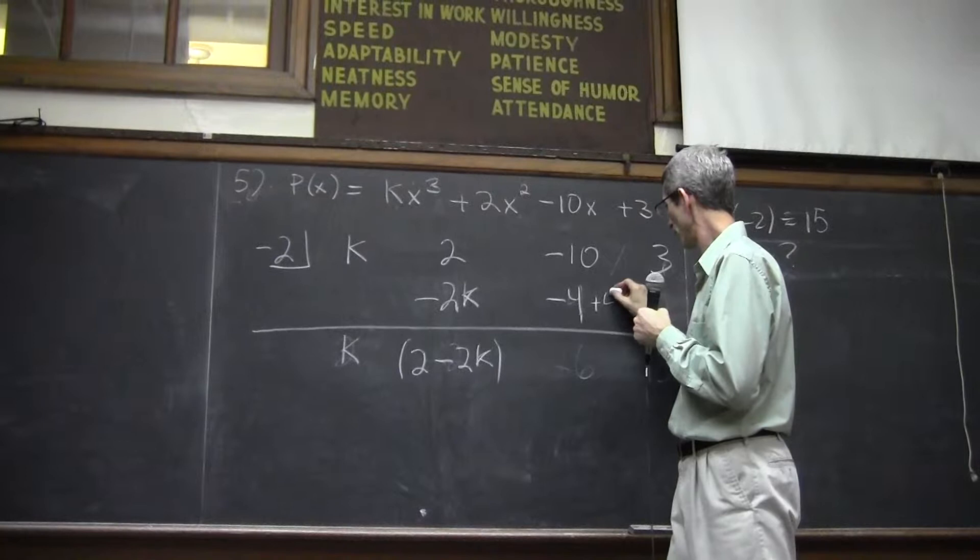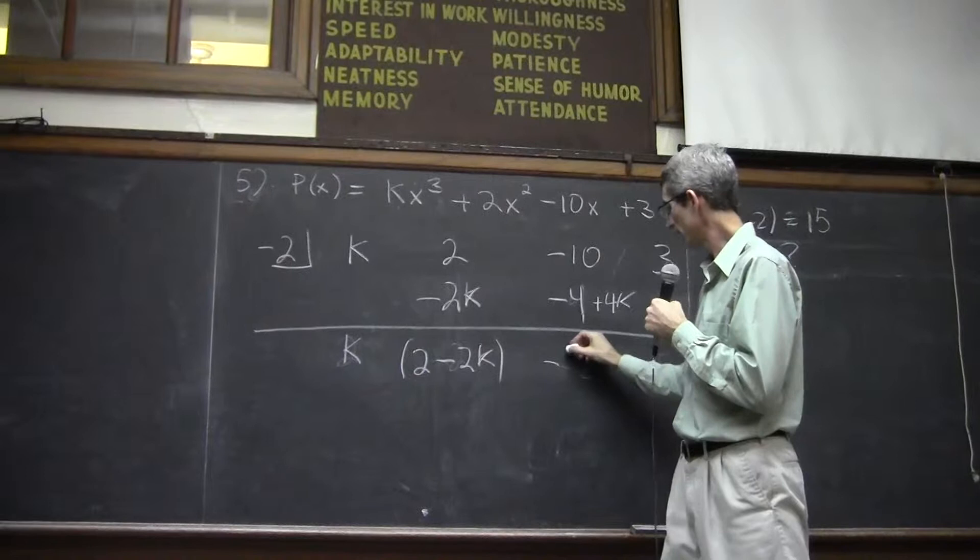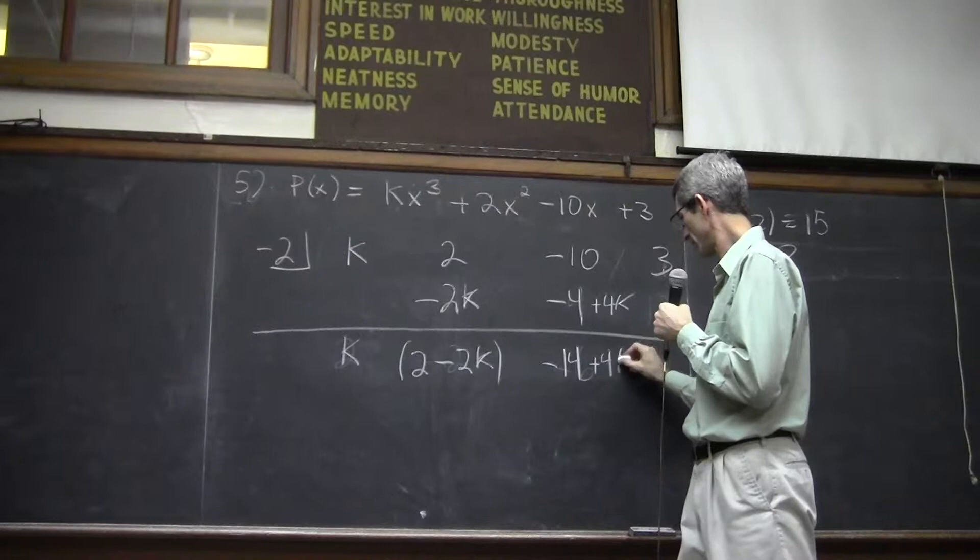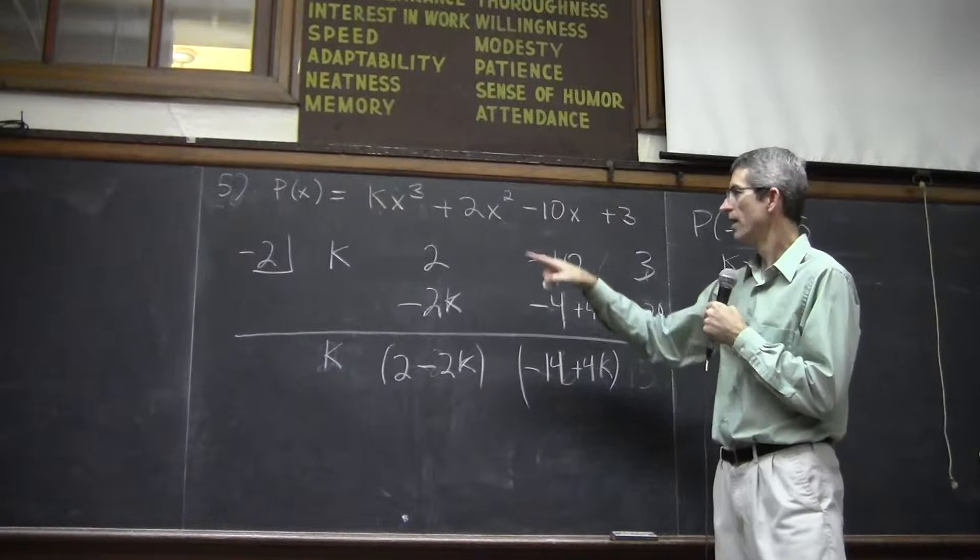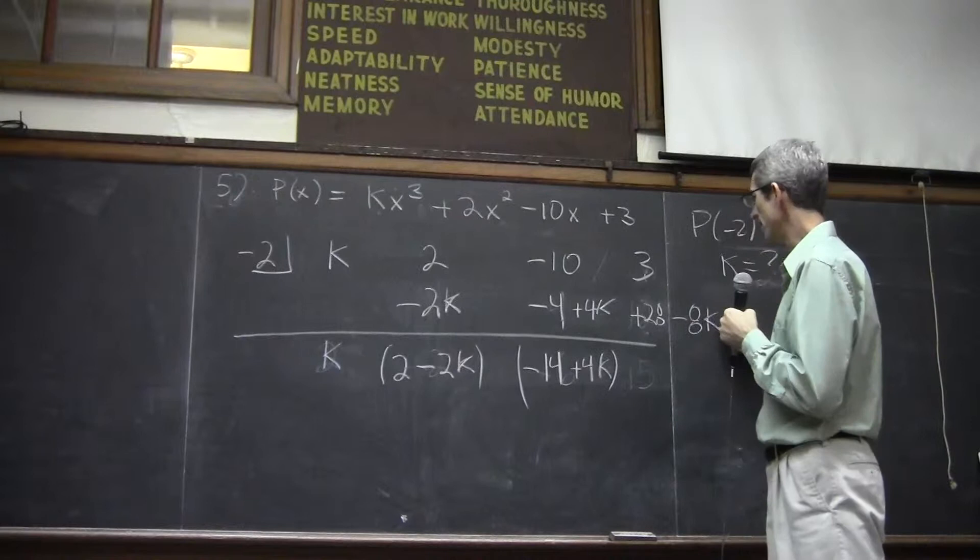Combine that. Combine similar terms. So the negative 10 and the negative 4 are negative 14. The 4k comes down. Once again, implied parentheses. Negative 2 times all that would be positive 28. The negative 2 times the negative 14. And the negative 2 times the positive 4k is negative 8k.